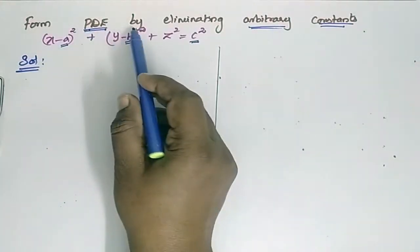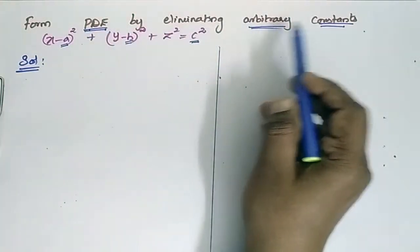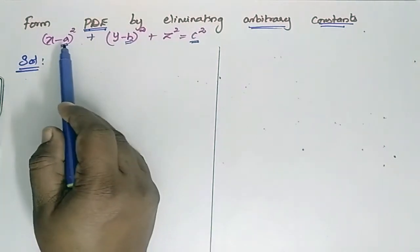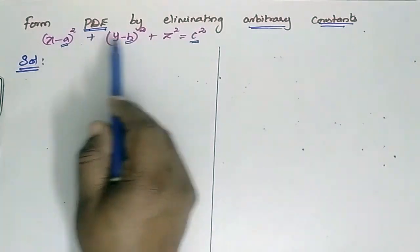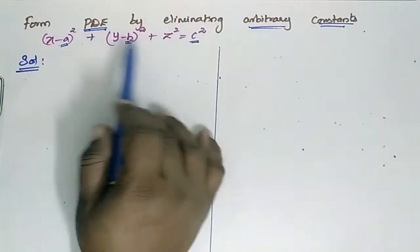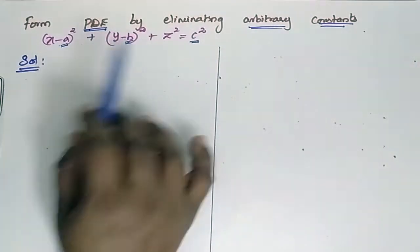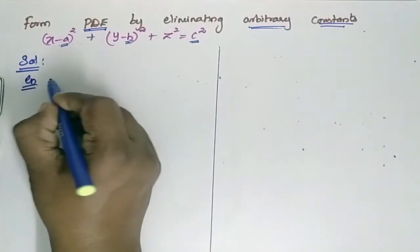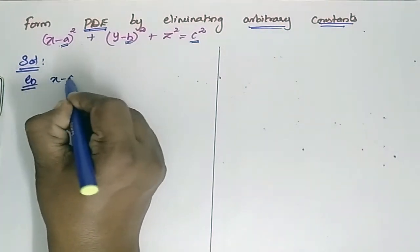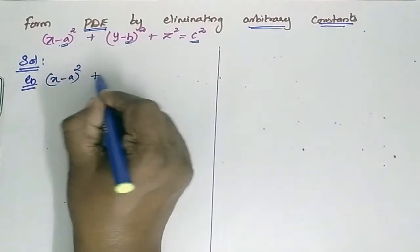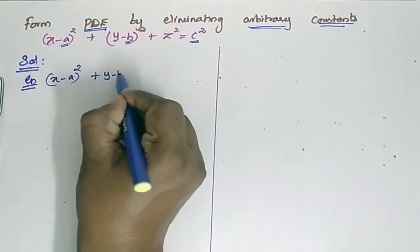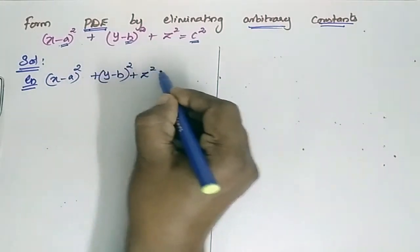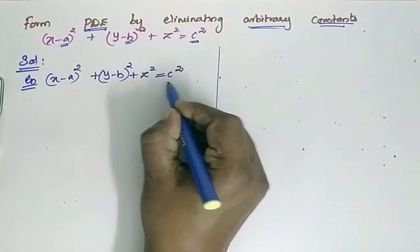Form a partial differential equation by eliminating arbitrary constants. We have two constants A and B, so we have to remove all of these. Given equation is: (x minus a) whole square plus (y minus b) whole square plus z square is equal to c square.